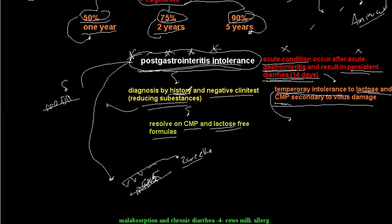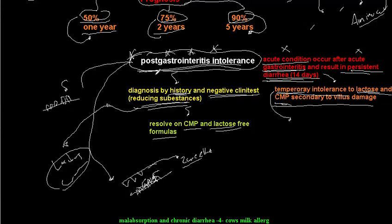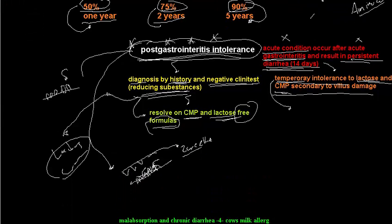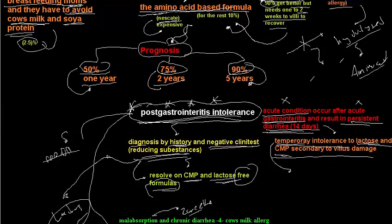Post-gastroenteritis intolerance is diagnosed by history and a positive Clinitest for reducing substances in the stool, checking for lactose and cow's milk protein. Treatment involves giving a cow's milk protein- and lactose-free formula during the recovery period. Once the villi heal, the intolerance resolves.